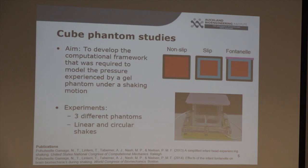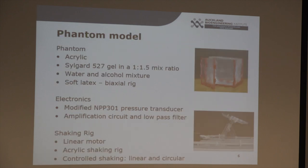On all three phantoms, two types of shaking experiments were done: a linear shake and a circular arc shake about a pivot. These shakes were done over a range of frequencies and amplitudes — amplitudes ranged from about 20 to 50 millimeters, and frequencies from about 2 to 8 Hz. The outer shells were created using acrylic. The gel used was Sylgard 527 in a 1-to-1.5 mix ratio, which had similar properties to that of the brain and is also used by other groups to model brain material properties.